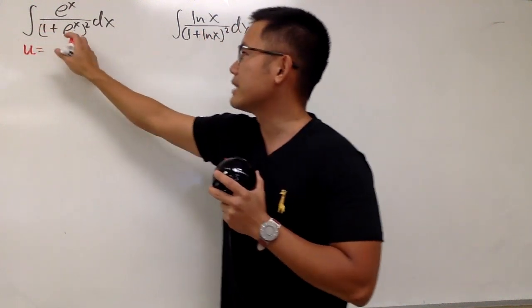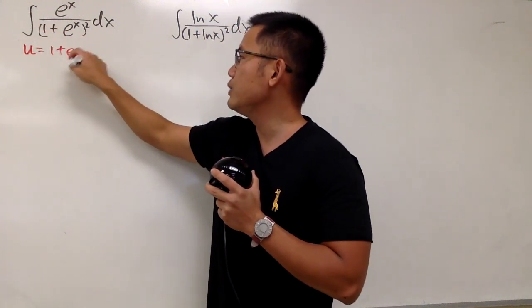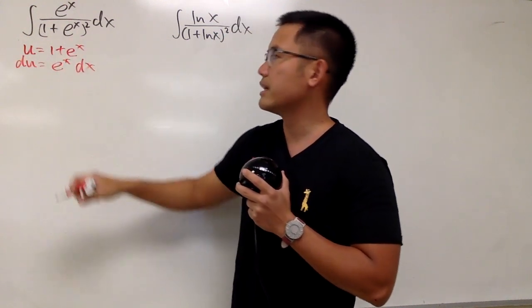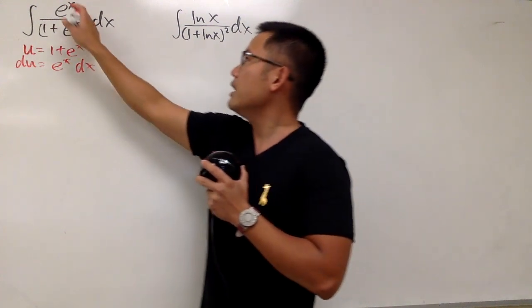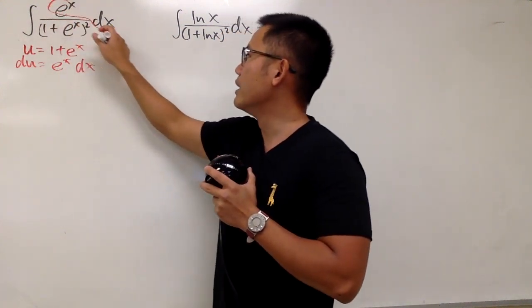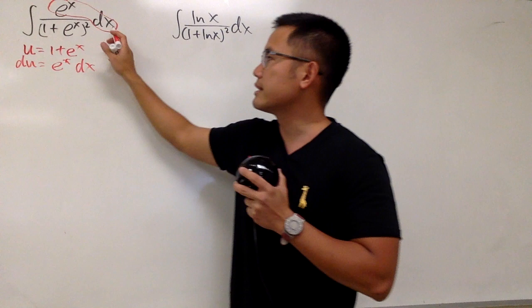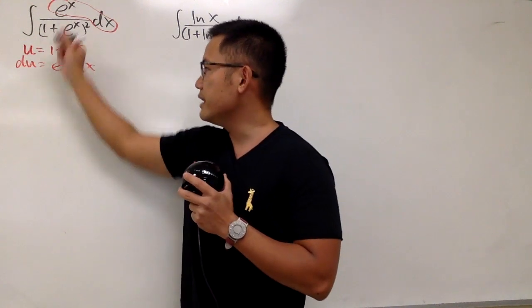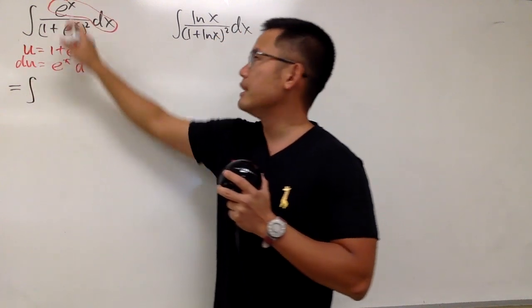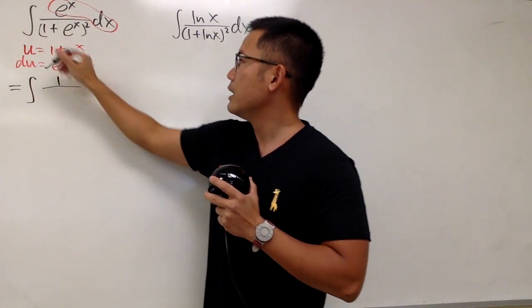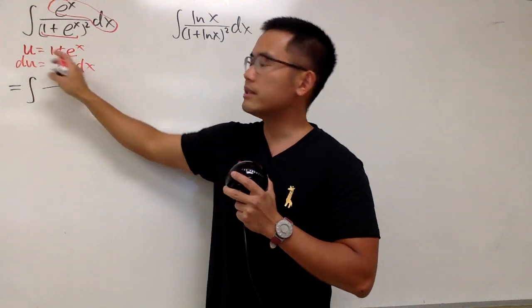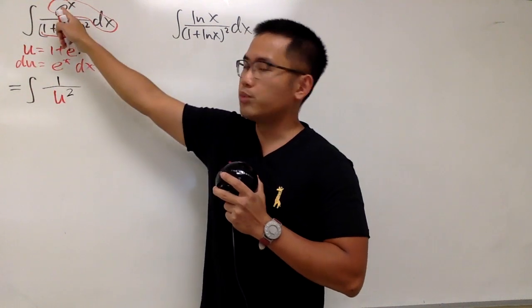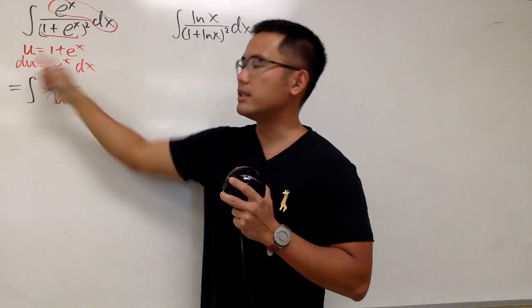Let u equal to the inside parentheses, which is 1 plus e to the x, and we will see that du will be just e to the x, and we have the dx. And now we can pair things up, because we see that this part right here is precisely e to the x times dx, and that will be just the du. Therefore, we can take this integral to the u world right away. We will have, let me put down the 1 on the top, over this part is just the u, so we have u squared in the denominator. And as we said, this right here is just the du.